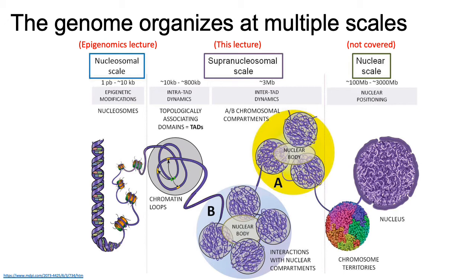It also turns out that entire chromosomes don't randomly distribute themselves around the nucleus. Certain chromosomes are known to have a preference for location within the nucleus. Even at a macroscopic level, chromosomes tend to segregate into different regions, known as chromosome territories.